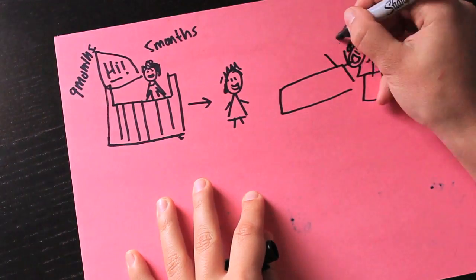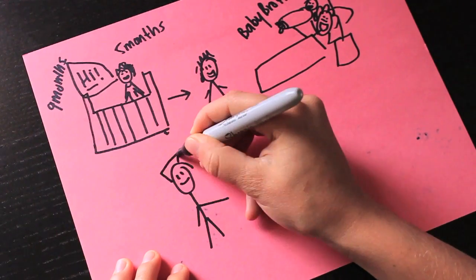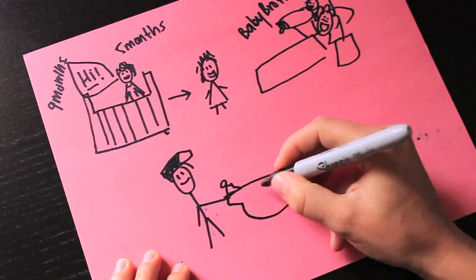When I turned three, my mom popped out my brother. He has red hair and freckles. We look nothing alike. My dad always used to joke and say he was the mailman's kid. My dad was a mailman.